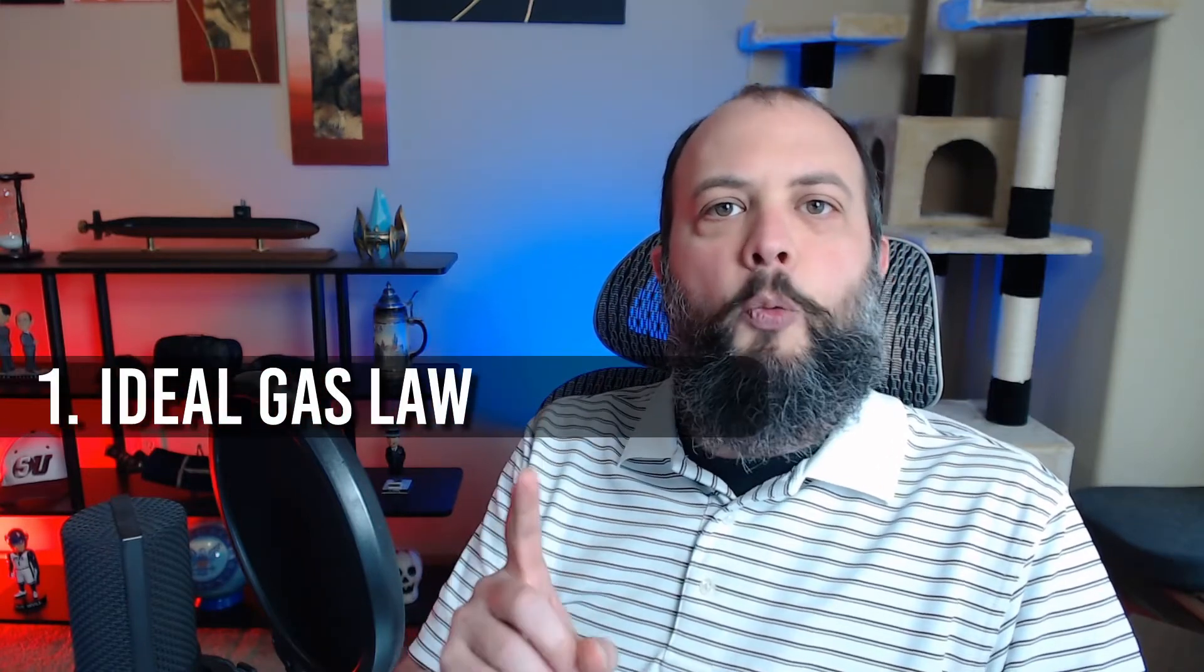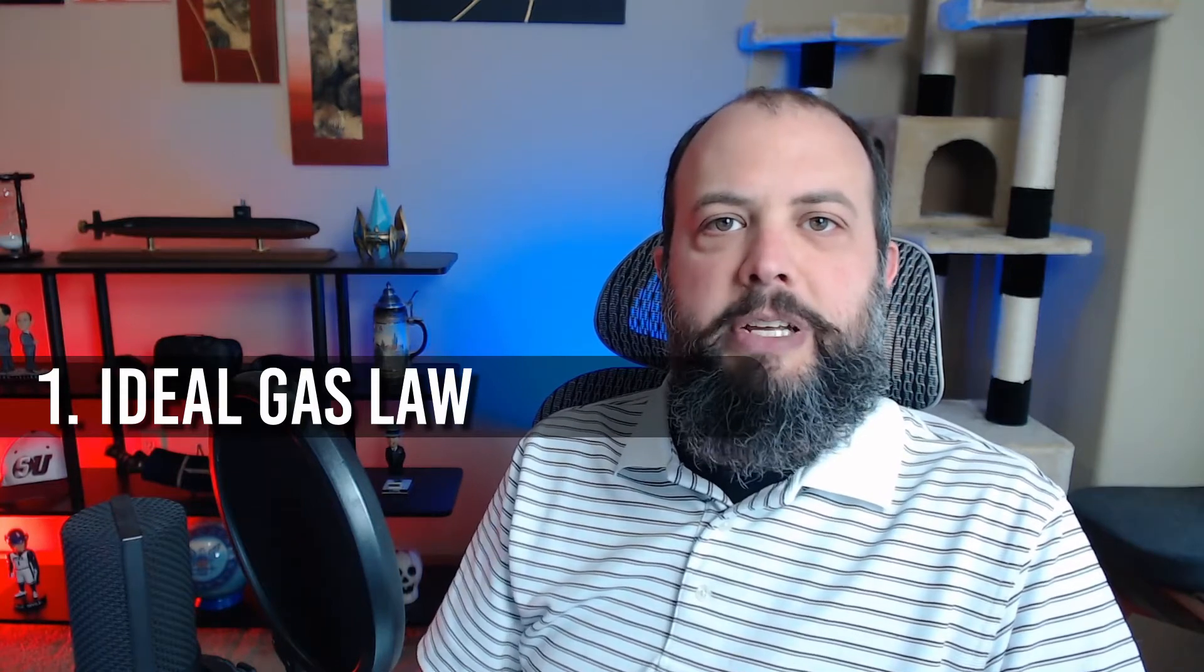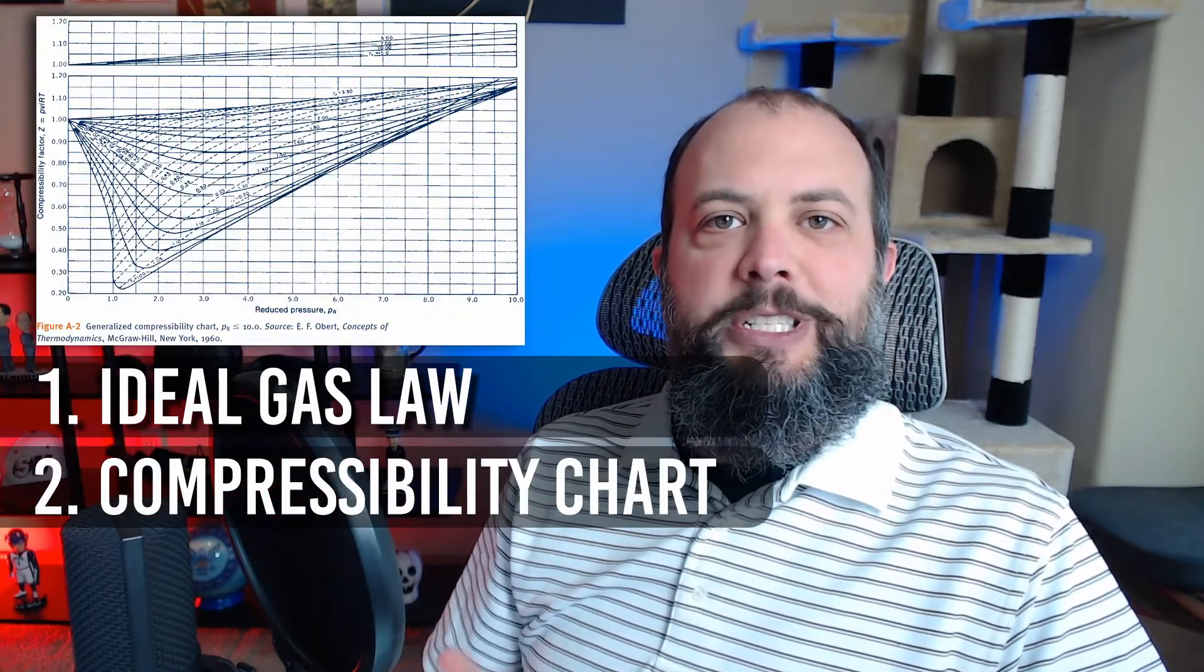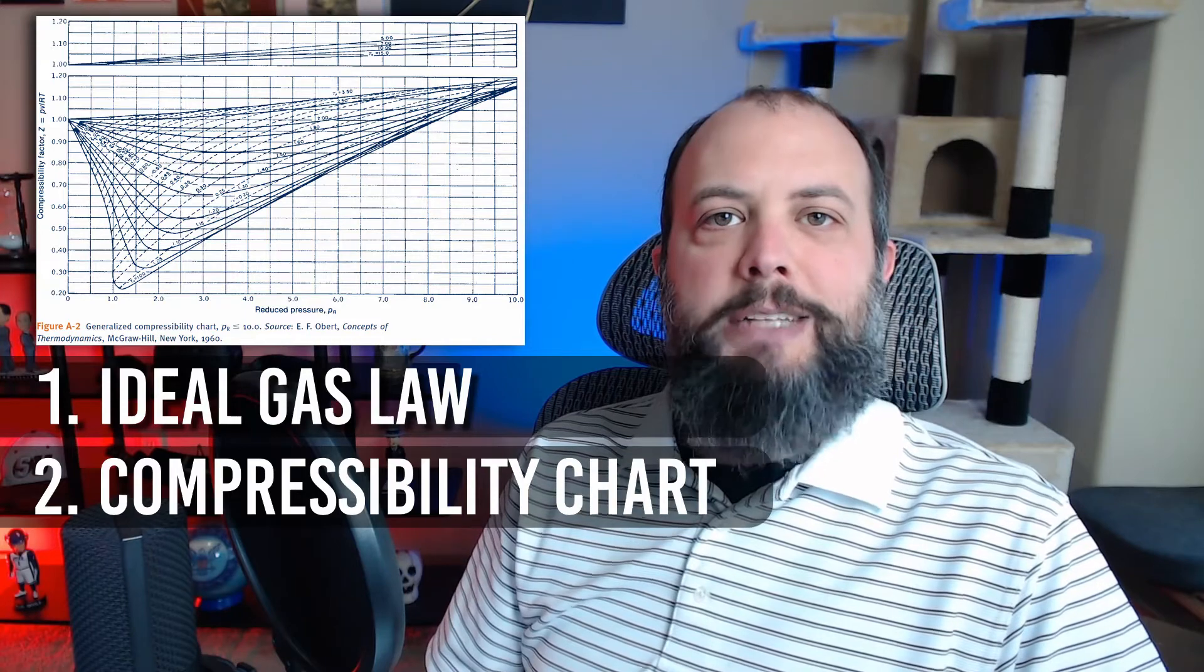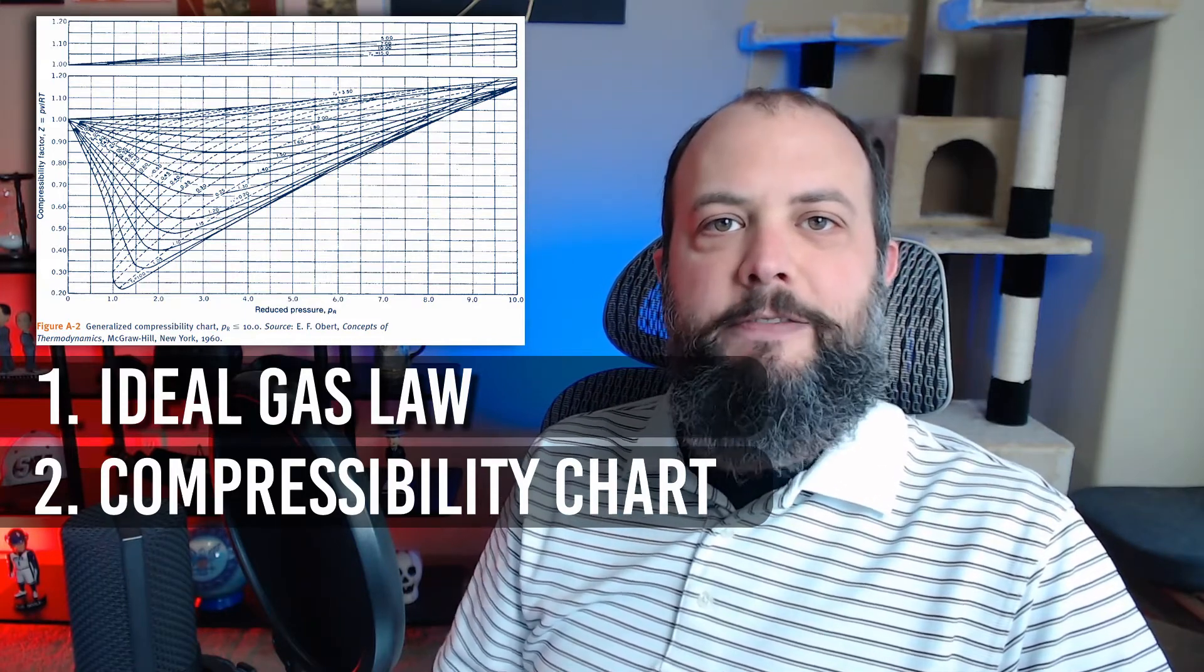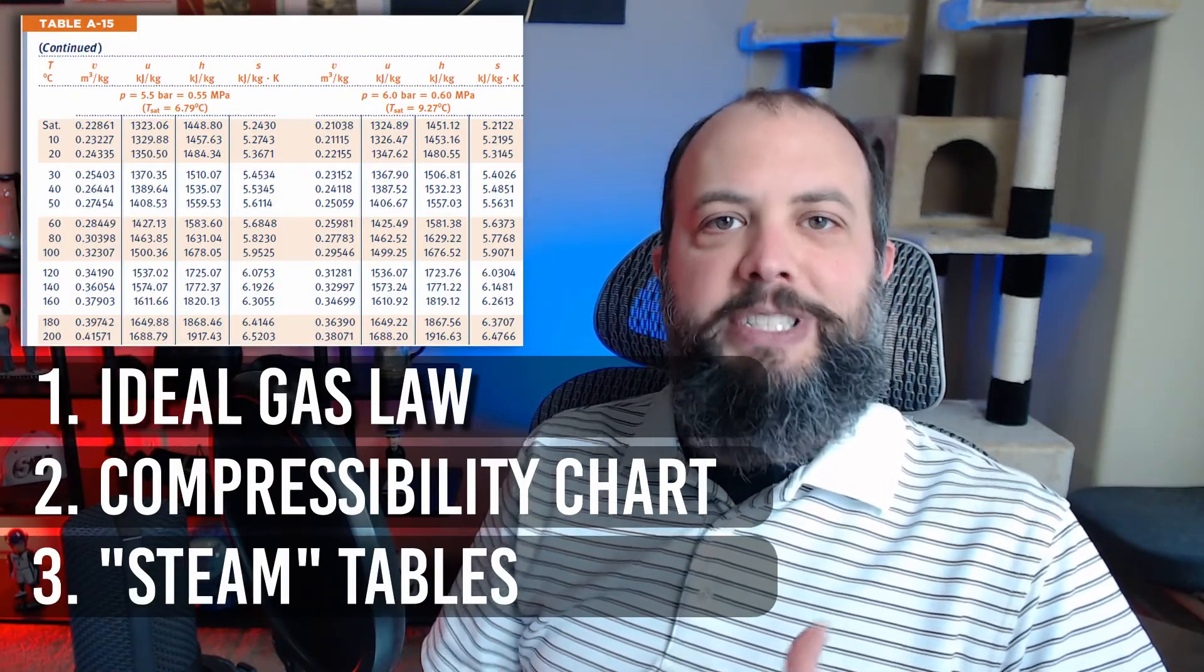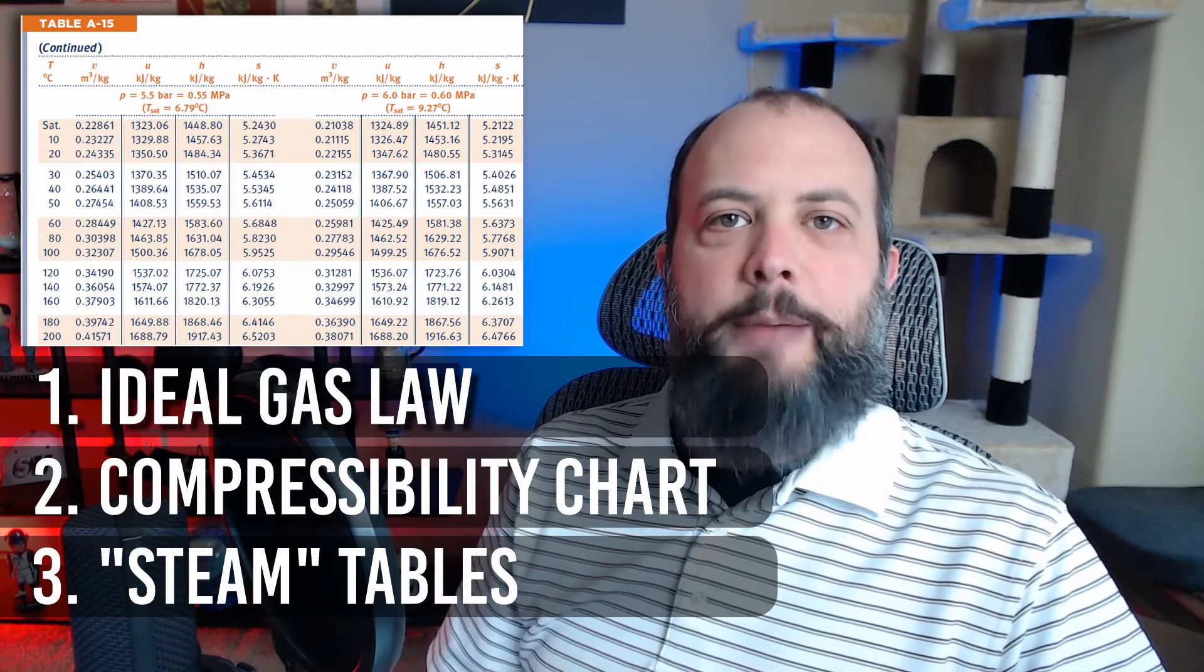The three ways we're going to solve this are number one, using the ideal gas law that you remember from introductory chemistry. Number two is this incredibly scary looking chart, the generalized compressibility chart, where you'll find the generalized compressibility factor Z. And then number three is Old Faithful, the reliable steam tables in the back of your thermodynamics textbook.